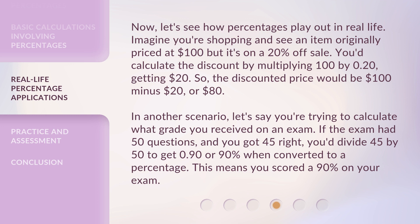In another scenario, let's say you're trying to calculate what grade you received on an exam. If the exam had 50 questions and you got 45 right, you'd divide 45 by 50 to get 0.90, or 90% when converted to a percentage. This means you scored a 90% on your exam.